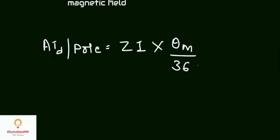Demagnetizing ampere turn is given by ZI multiplied by theta M divided by 360, where Z is the number of conductors, I is current, and theta M is mechanical angle.